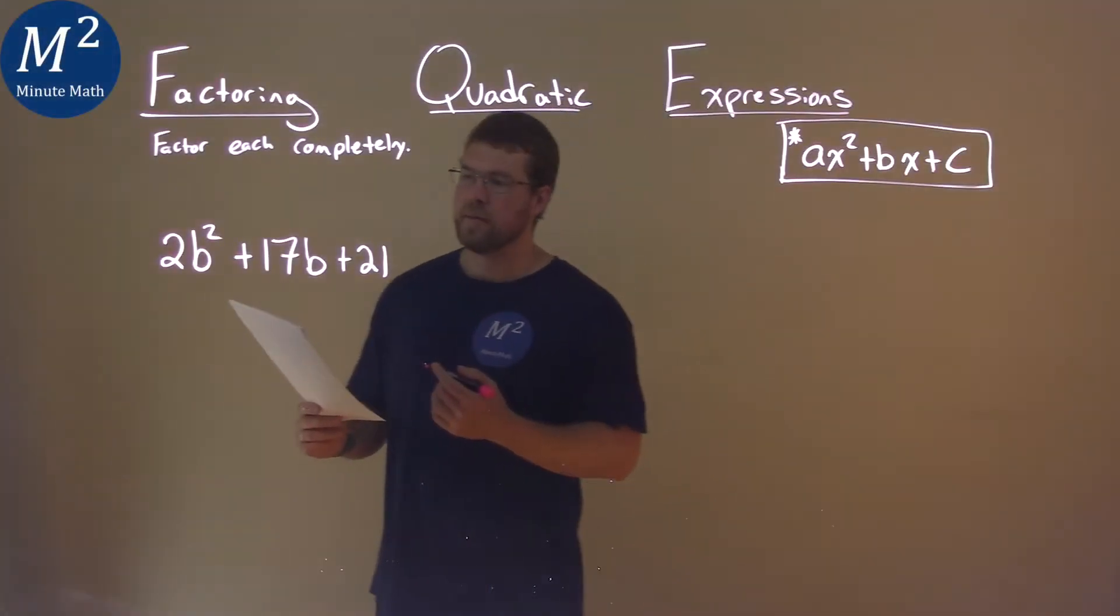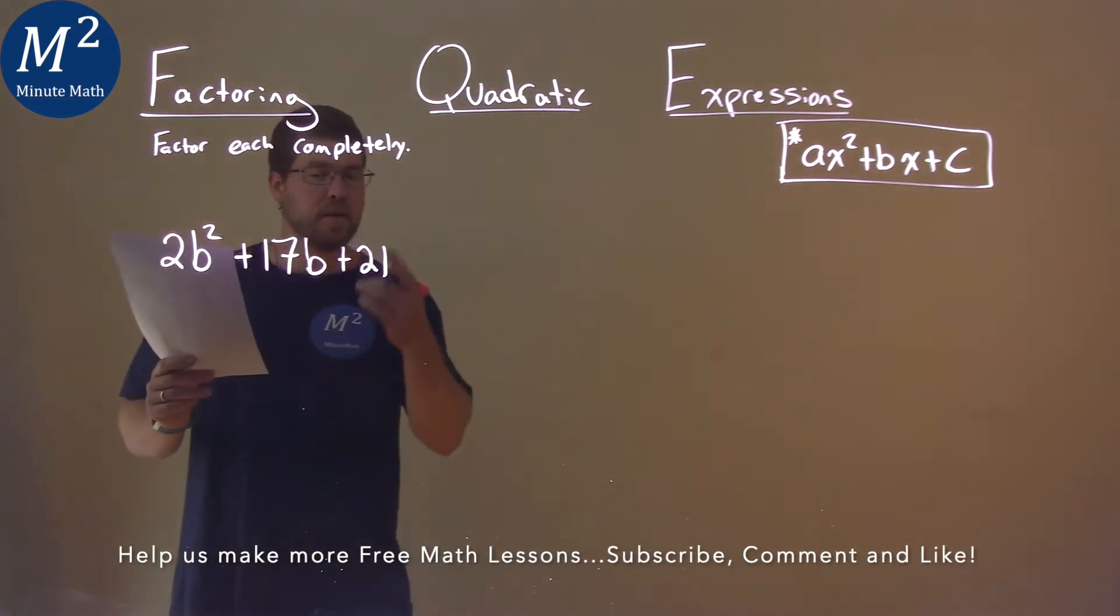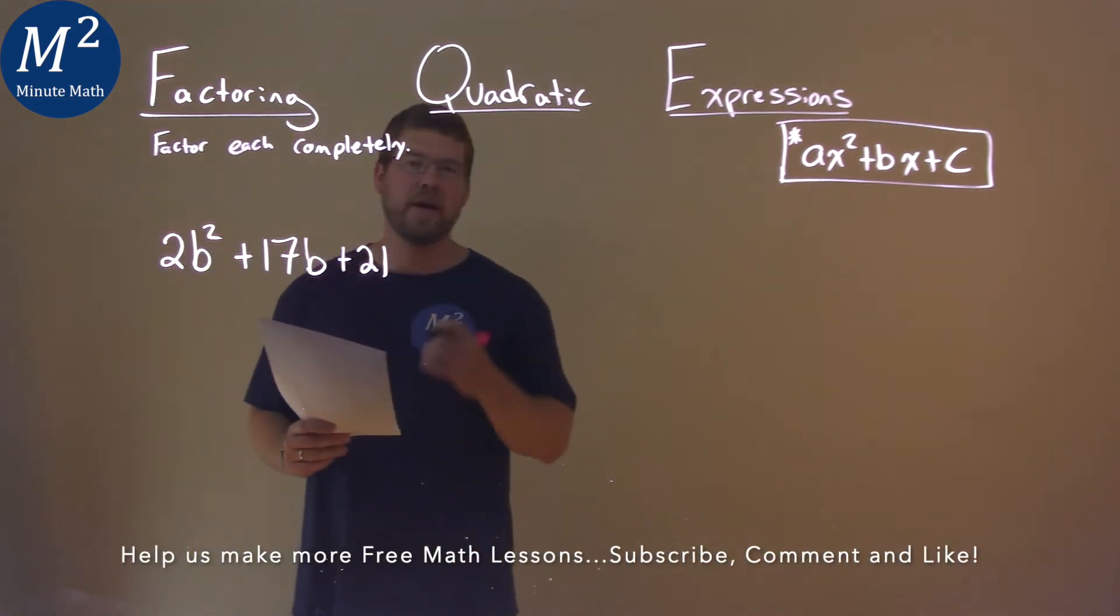We're given this problem right here. 2b squared plus 17b plus 21, and we need to factor this completely.